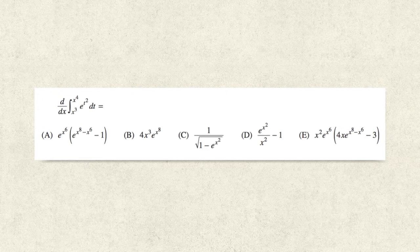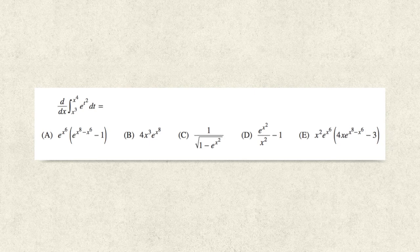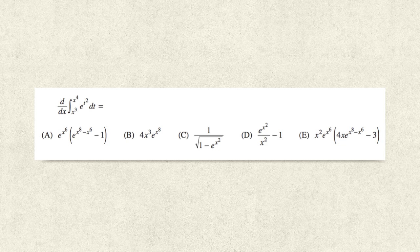The problem asks, which of the following is the derivative with respect to x of the integral from x cubed to x to the fourth e to the t squared dt?